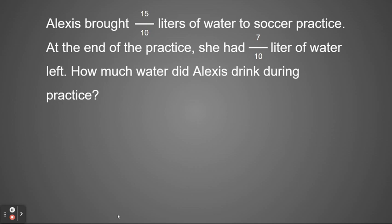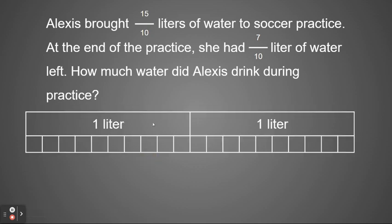So we're going to think about this. We're going to use a picture to help us solve this problem. If she had 15 tenths, that means she has more than one liter. So when we draw our box, we're going to need to have two boxes that equal a liter.